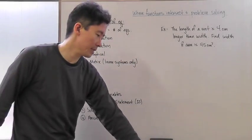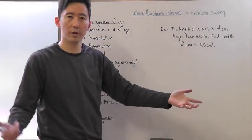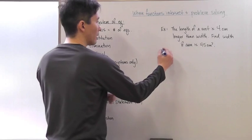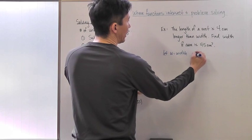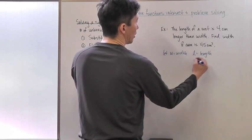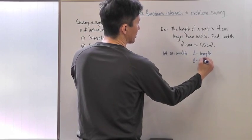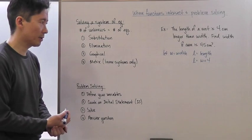First, let's define our variables. The most important one is width, since that's what we're looking for. Let w equal the width and l equal the length. We know that l = w + 4, because it's 4 centimeters longer than the width.